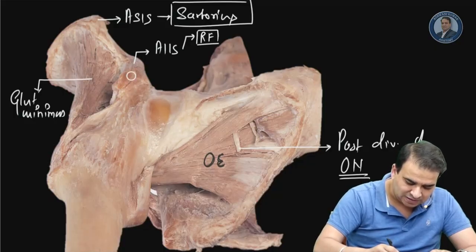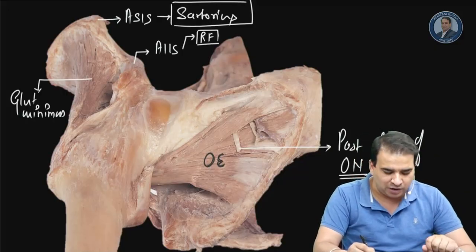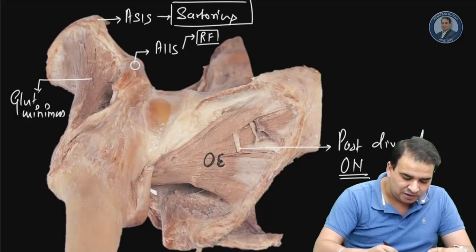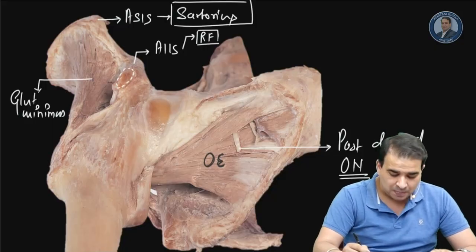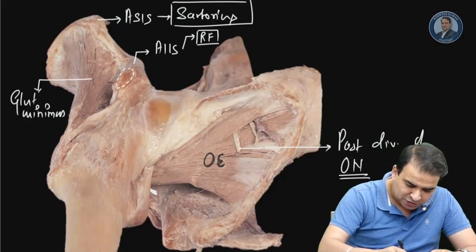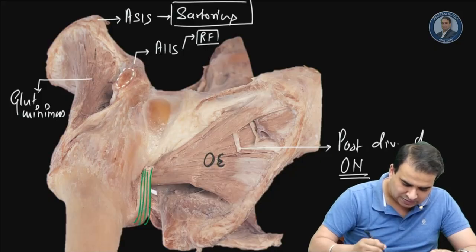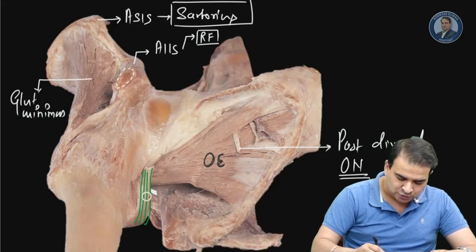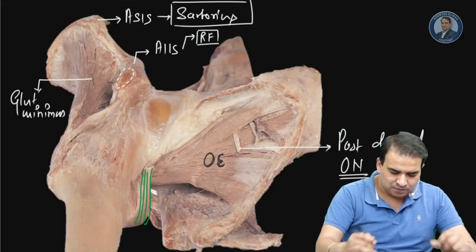One attachment to the anterior inferior iliac spine is the rectus femoris - you can see the cut section of the rectus femoris muscle here. You can also appreciate a tendon going toward the lesser trochanter - this is the tendon of the iliopsoas, which you can see going toward the lesser trochanter.